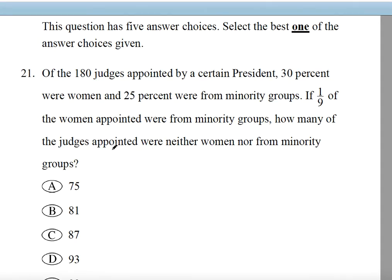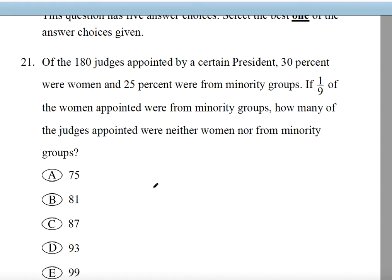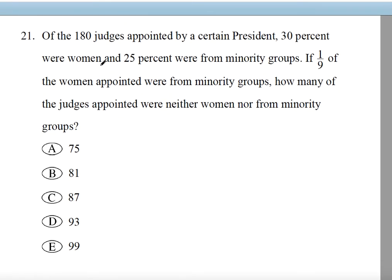What we need to do first is find the women out of 180 judges. We multiply 180 by 30%, which is 0.30. Using the calculator, that gives us 54. So 54 women.